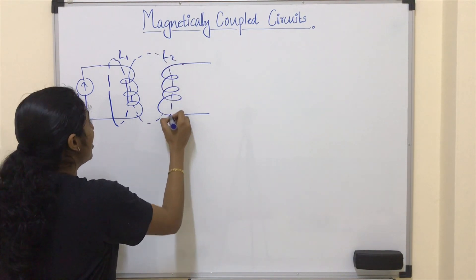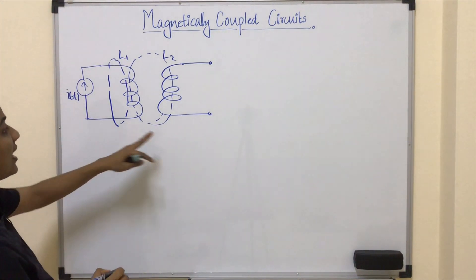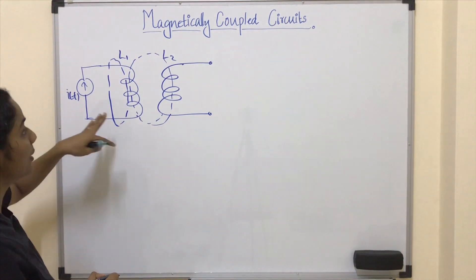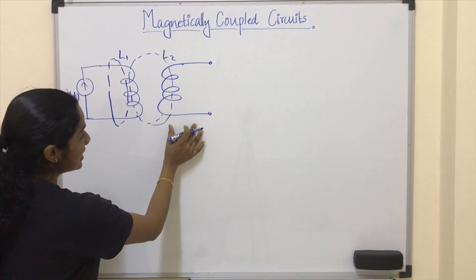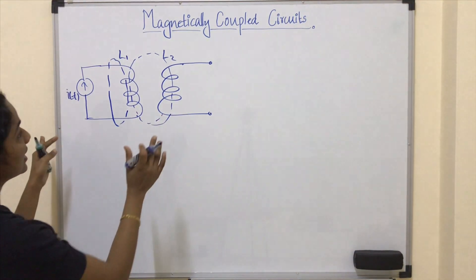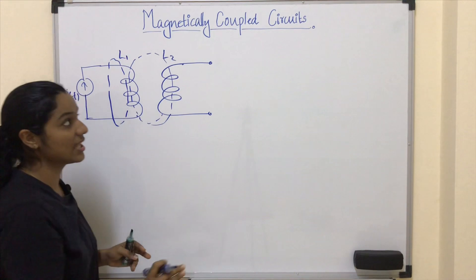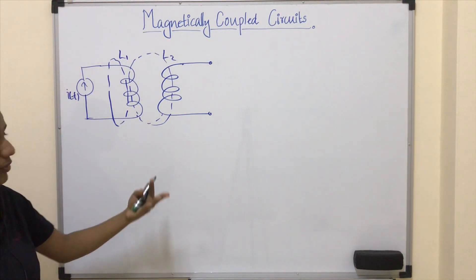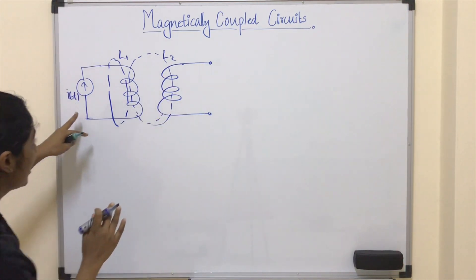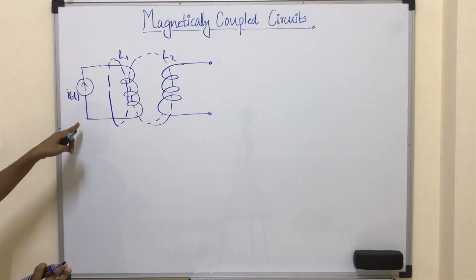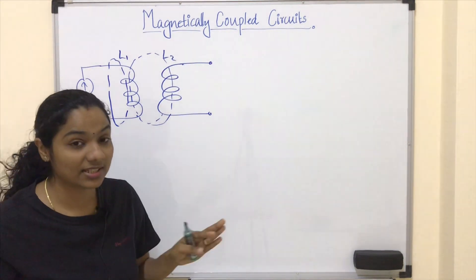Coil 2 is in close proximity of coil 1, so some of the magnetic flux is cut by coil 2 as well. Assume coil 2 is open. There is no physical connection between the two coils, but because of the time varying current passing through coil 1, some flux is cut by coil 2 — that means there is magnetic coupling between them. When one or more circuits or circuit elements share a common magnetic field generated by one of the loops, they are said to be magnetically coupled.